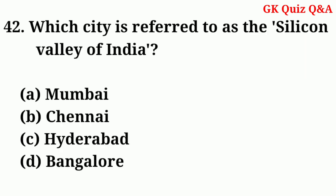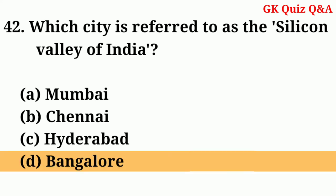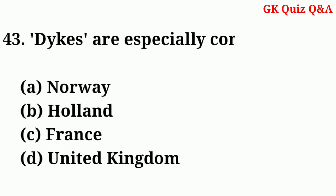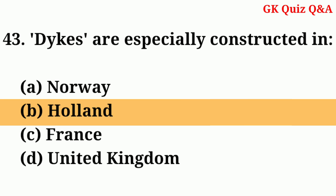Which city is referred to as the Silicon Valley of India? Answer: Bangalore. Dikes are specially constructed in? Answer: Holland.